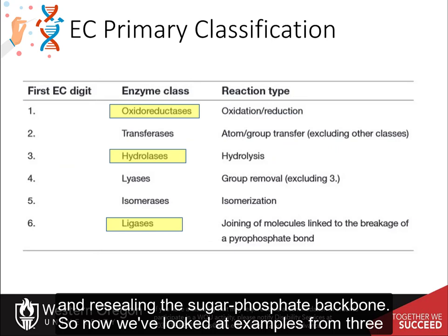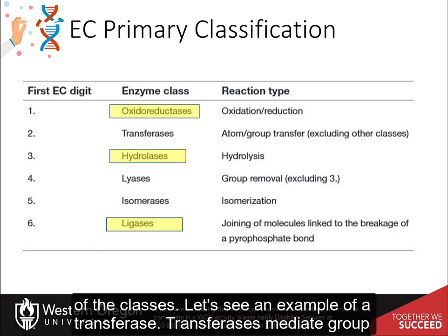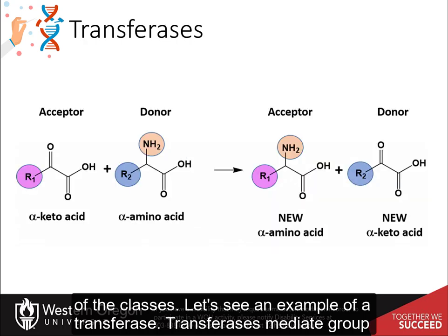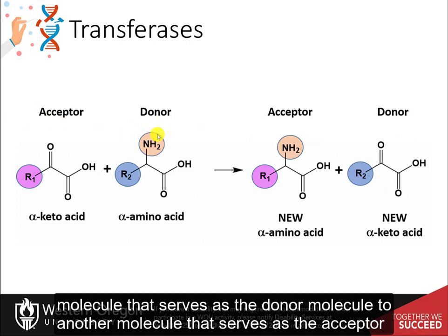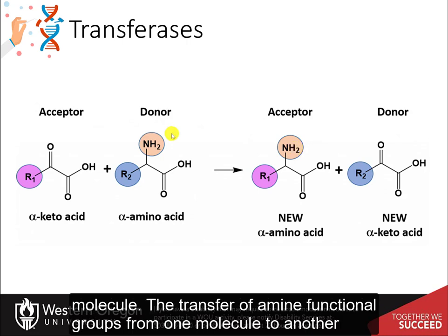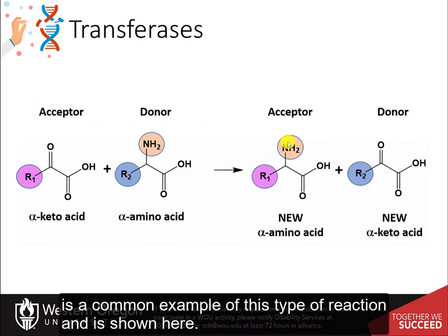Now we've looked at examples from three classes. Let's see an example of a transferase. Transferases mediate group transfer reactions, where a functional group is transferred from a donor molecule to an acceptor molecule. The transfer of amine functional groups from one molecule to another is a common example of this type of reaction.